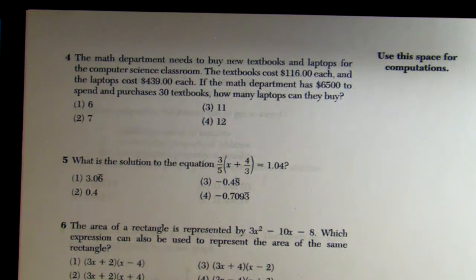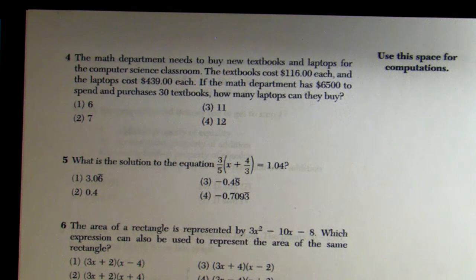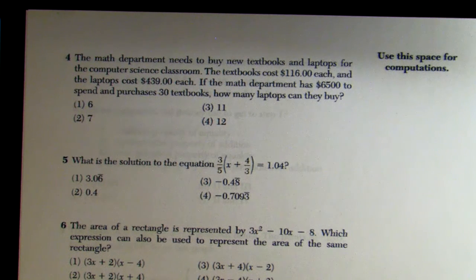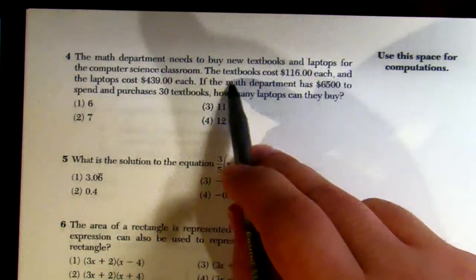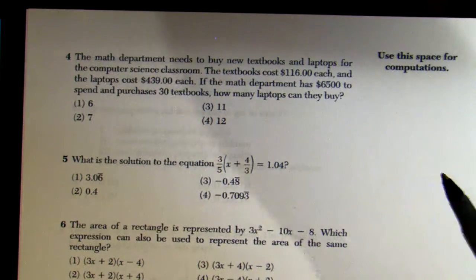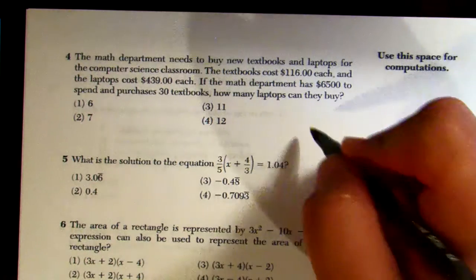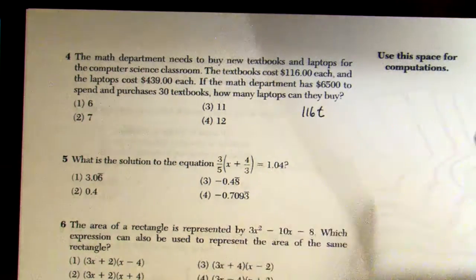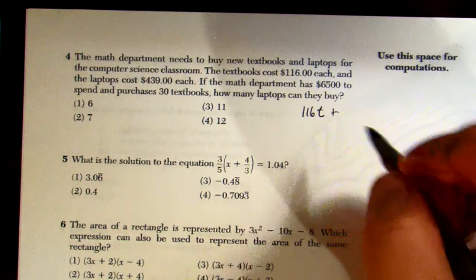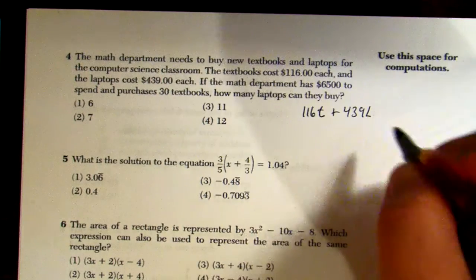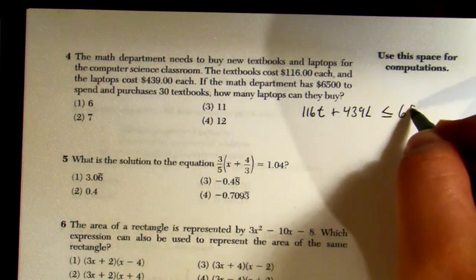Number 4: the math department needs to buy textbooks and laptops. Textbooks cost $116 each and laptops cost $439 each. They have $6,500 to spend and purchase 30 textbooks. How many laptops can they buy? Since they cannot spend more than $6,500, that tells me inequality. Using t for textbooks and l for laptops: 116t + 439l ≤ 6,500.